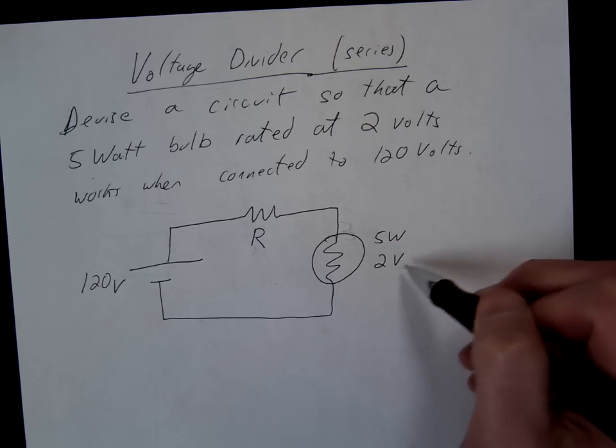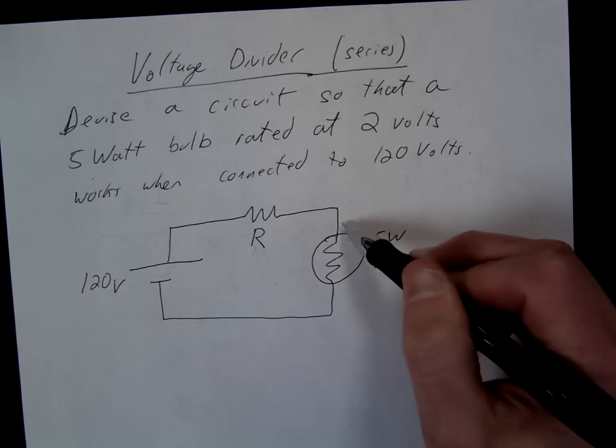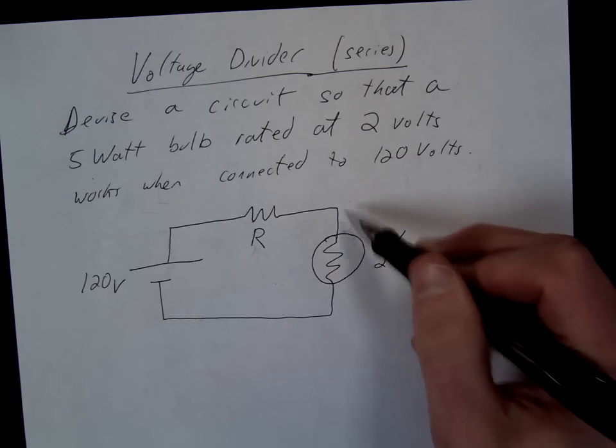So if we know the power and we know the voltage, we want this to get 2 volts, right? So we can find the current. How are we going to find the current through this circuit?